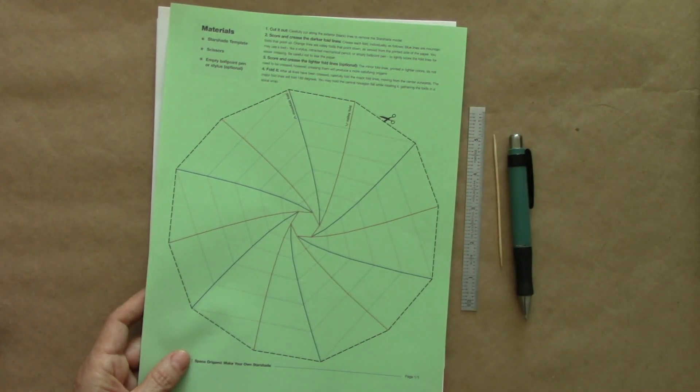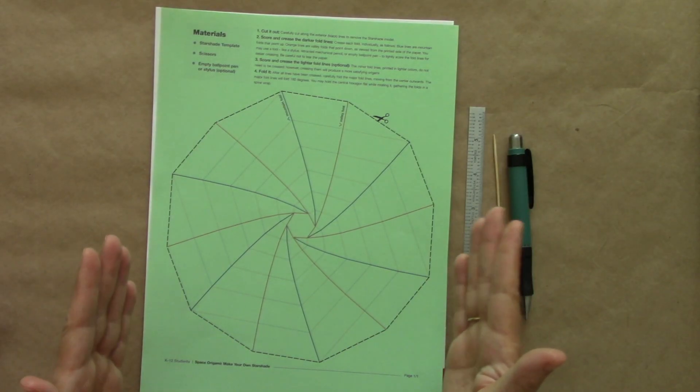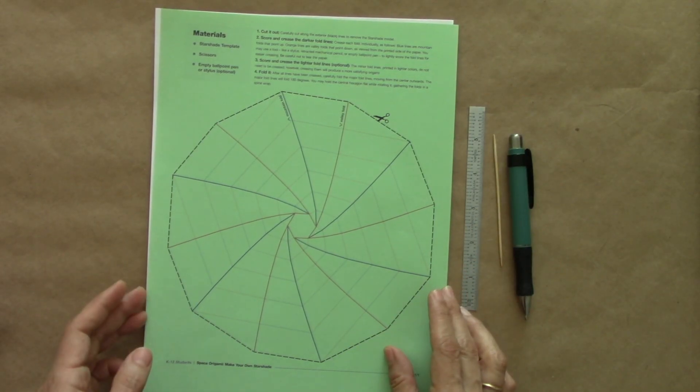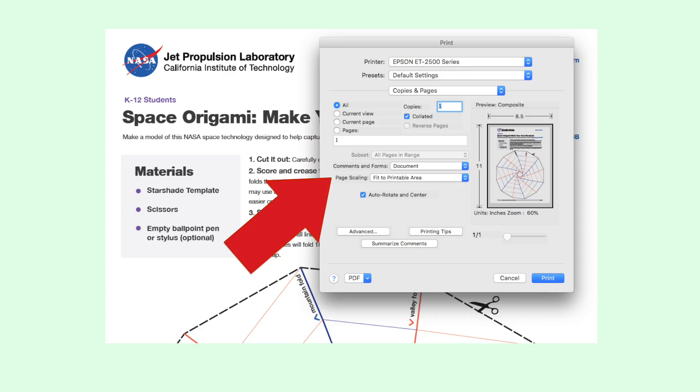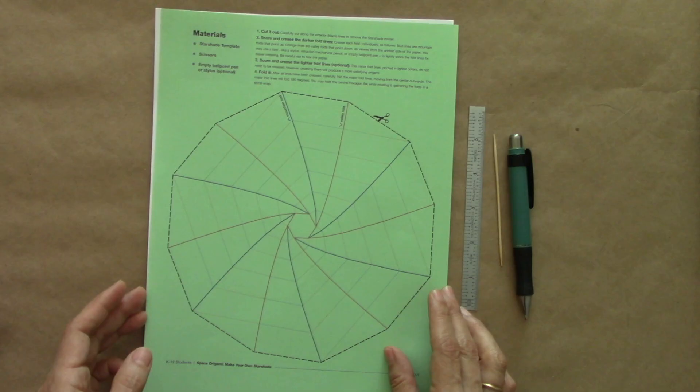It is ideal if you can print the pattern on an 11 by 17 inch paper. In my case, I don't have a large printer, so at the time of printing, I chose the option Fit to printable area and printed it on letter size.